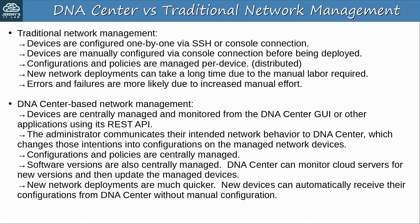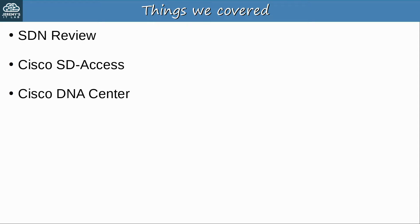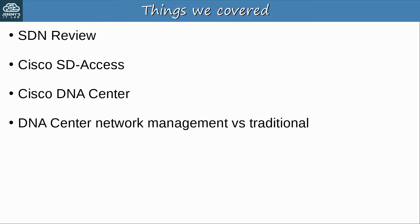Make sure you're aware of those points because they are mentioned on the exam topics. Let's review what we covered. We first reviewed SDN and newly introduced the terms application layer, control layer, and infrastructure layer. Then, as an example of SDN, I introduced some concepts of SD Access — the main takeaways are the concepts of underlay, overlay, and fabric. Then I showed you some functions of Cisco DNA Center and compared network management with DNA Center to traditional network management. Remember, DNA Center is an SDN controller in SD Access architecture, but it can also be used as a general network management tool, even in networks that don't use SD Access.